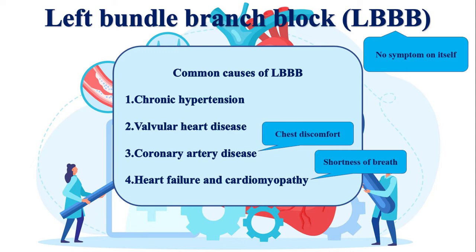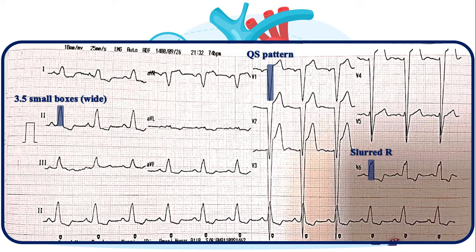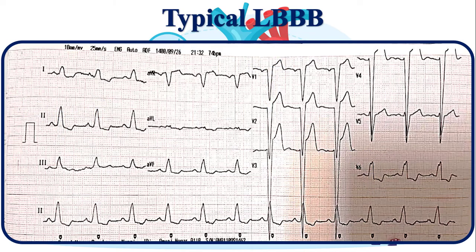Let's go through several examples. In this first example, the duration of QRS complexes is about 3.5 small squares. There is a QS pattern in V1, with a slurred R-wave in V6. Thereby, this strip demonstrates typical left bundle branch block. Also note the absence of septal Q-wave, discordant ST segment elevations in V1 to V4, and discordant ST depressions in inferior and lateral leads, all attributable to LBBB.